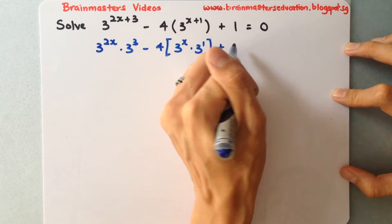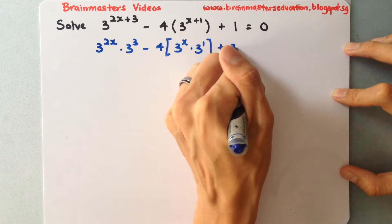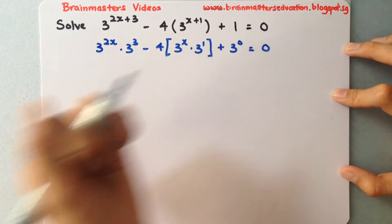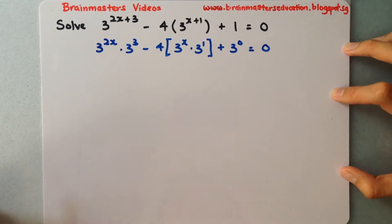The plus 1 term can be written as 3 to the power of 0. So this equals 0. We may or may not need this, we'll see.